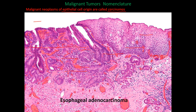Here is an esophageal adenocarcinoma slide. On one side you can see normal tissue, and on the other side there's a big mess — that's the adenocarcinoma. You can see the differences between the adenocarcinoma region and the normal region. In the cancer region, you can see little glandular patterns forming, and a lot more cells because they're dividing rapidly.